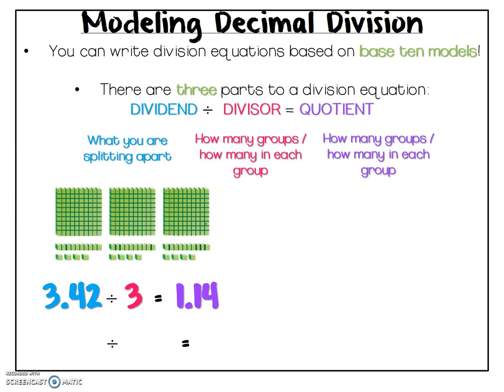Now the second division equation we could write still has to do with those three groups, but now the three is going to be our quotient. I could also write an equation where my answer is that I have three full groups. I'm still splitting apart 3 and 42 hundredths because my amount hasn't changed. But now my divisor tells me how many are in each group, which means I would be splitting apart the 3 and 42 hundredths into sets of 1 and 14 hundredths, which would leave me with three sets. Either one of those equations would be accurate for that particular model.